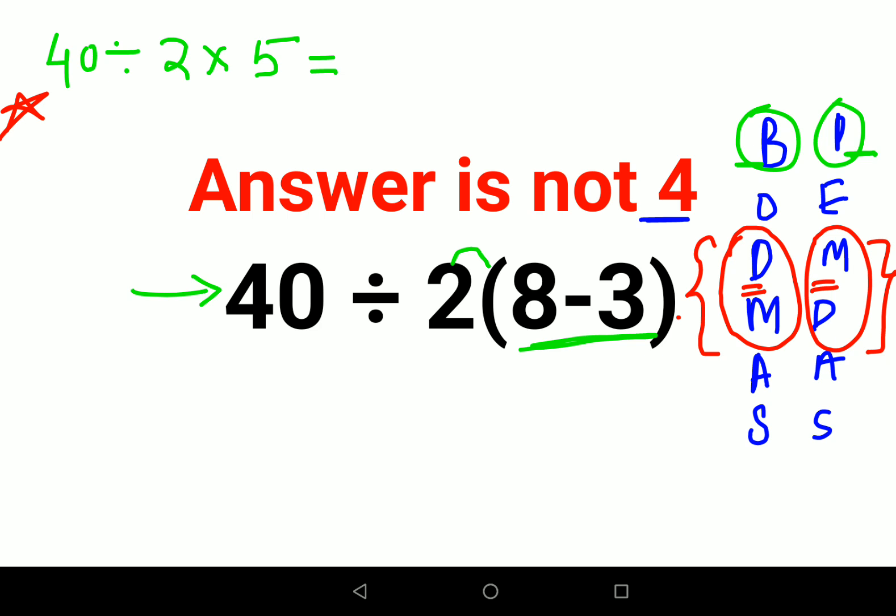So if that is the scenario, then what do you do in this kind of scenario when you have just division and multiplication? Should we do division first or should we do multiplication first? If you do division first, you will get 40 divided by 2, that gets you 20, into 5, so answer comes out to be 100.